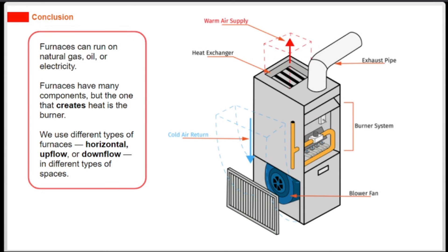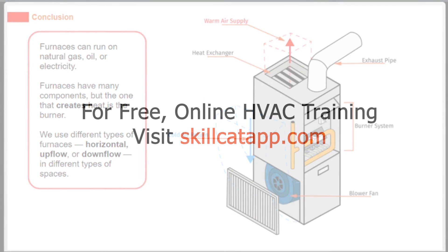Furnaces can run on natural gas, oil, or electricity. Furnaces have many components, but the one that creates heat is the burner. We use different types of furnaces — horizontal, upflow, or downflow — in different types of spaces.